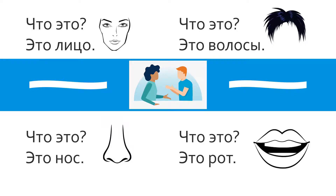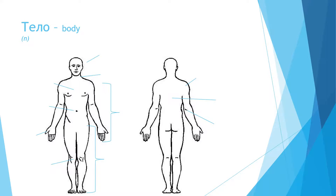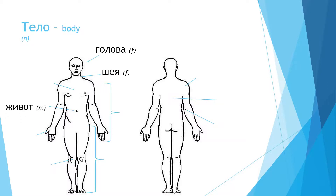Now that we've gone through the parts of a person's face, let's look at the rest of the body. The word body is тело, and it is neutral. Let's start at the top — we've got a person's head. That is голова, and it is female. And the head is connected to the шея, which means neck — also female. Next, I want you to focus on the stomach: живот. That one is male.